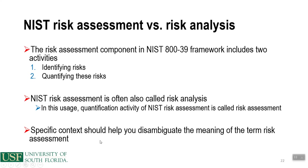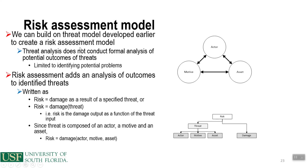We can build on the threat model developed earlier in the class to build a risk assessment model. Threat analysis does not conduct a formal analysis of potential threat outcomes — it's limited to identifying potential problems. Risk assessment adds an analysis of outcomes. It's written as: risk equals damage as a result of the specified threat, or risk = damage(threat). Risk is a damage output as a function of the threat input. Since the threat is composed of an actor, a motive, and an asset, risk = damage(actor, motive, asset).